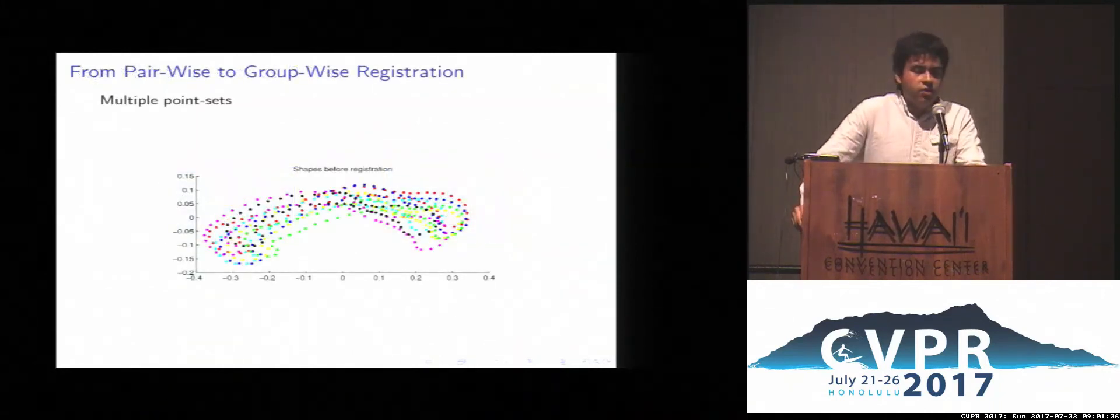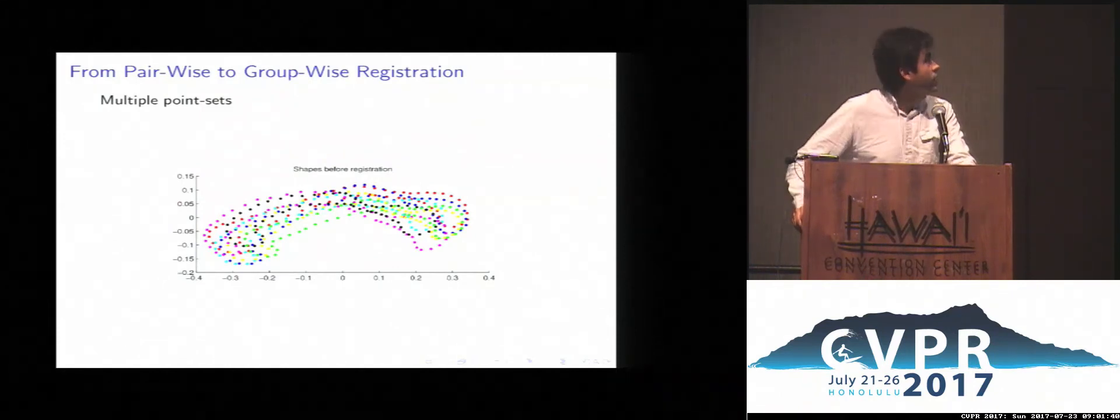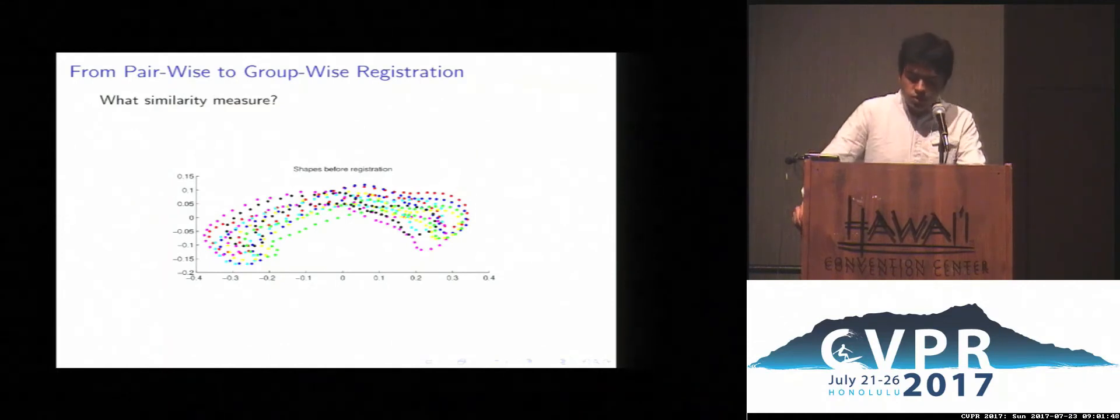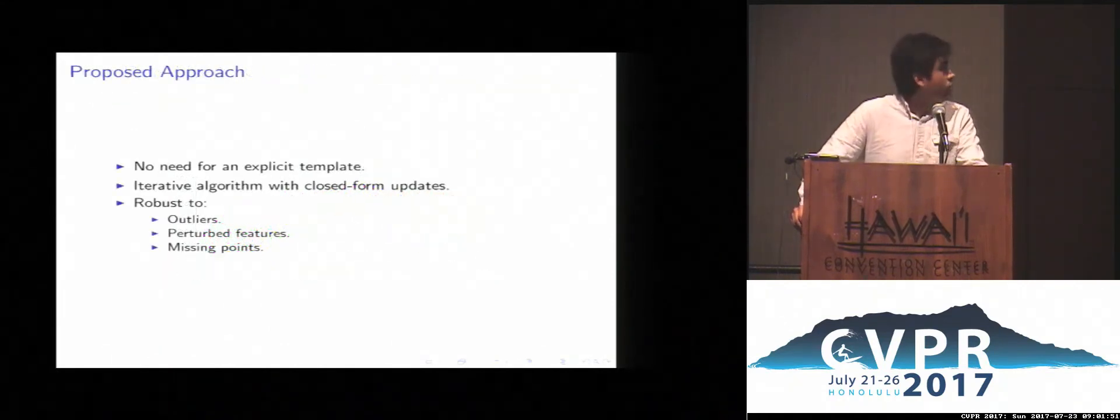But then the question comes when you have multiple sets to be aligned simultaneously. So what kind of templates you can use, what would be the good cost function for this? What we propose here is to use Rényi second-order entropy.